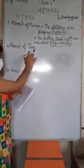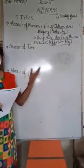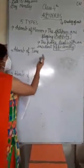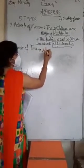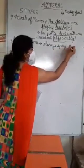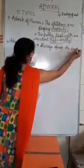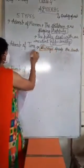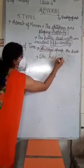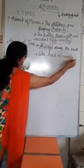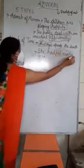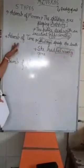Now, Adverb of Time. Time means words like here, there, yesterday, tomorrow — when you do the verb, that indicates time. For example: Always speak the truth. So here, always is the Adverb of Time. Another example: She had already gone. So already means time — she had already moved. This is the Adverb of Time.